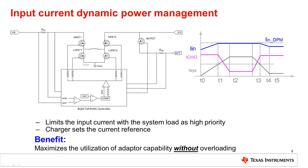With this example using the BQ25710, we can see how input current dynamic power management works. The BQ25710 is an excellent device for USB PD applications, as it is able to provide the 5 through 20 volt PD range in its on-the-go mode, and its buck-boost architecture allows it to charge the battery from input voltages that are either above or below the battery's voltage level. Once a current limit is negotiated using USB PD, this current limit is programmed into the input current register of the BQ25710 using SMBUS. Looking at T0 in the chart, at this time the system current requirement is low, so the BQ25710 can charge the battery at full rate without hitting its input current DPM level.